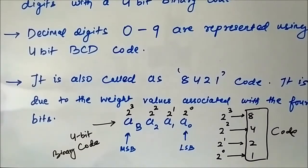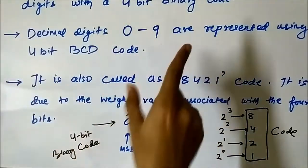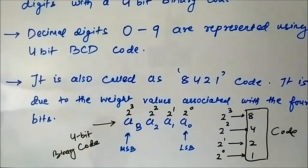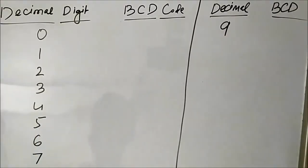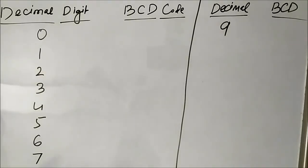The BCD code, the binary coded decimal coding system, is also called as 8421 code. So if somewhere it is mentioned that the following data is represented using 8421 coding mechanism, then you should understand that it is the binary coded decimal technique. Let us see how the various digits, the 10 symbols of the decimal number system, are represented using the BCD or 8421 coding technique. In BCD, each of the 10 symbols used in the decimal number system is represented using 4-bit binary codes.